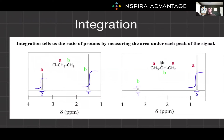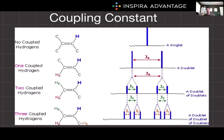Now let's talk about integration. We're not doing calculus, but integration represents the area under each signal — an integral — which is proportional to the number of protons contributing to that signal. By measuring the relative areas of these signals, you can determine the ratio of protons in different chemical environments. This is a low-yield MCAT topic, so don't worry too much. The coupling constant is the distance between the peaks in a splitting pattern, measured in hertz. It provides information about the relative orientation of neighboring protons — cis, trans, geminal. Coupling constants are not typically tested on the MCAT; I've seen one question ever, so very low yield but possible.